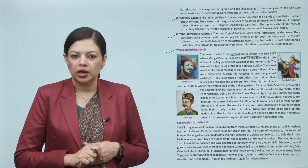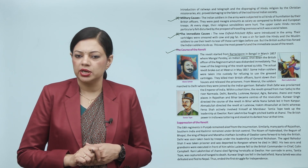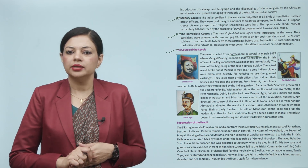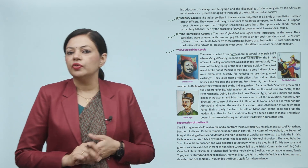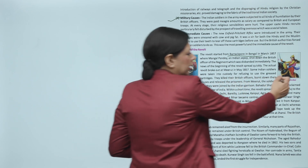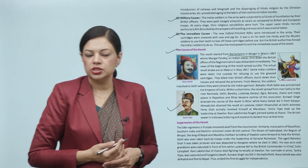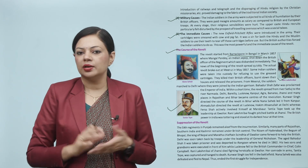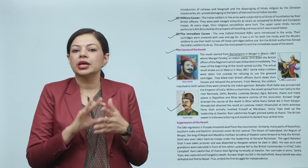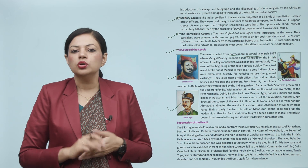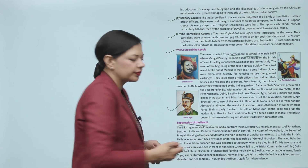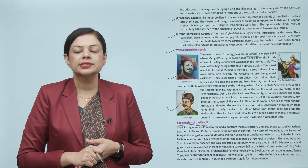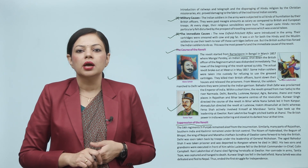Tatya Tope took up the leadership at Gwalior, and Rani Lakshmi Bai fought pitched battles at Jhansi. The British power in India was tottering and stood at its darkest hour. The revolt of 1857 had different heroes and leaders in different places who sacrificed their lives for the country. This revolt was fought on a very large scale from different corners of the country. However, the Sikh regiments in Punjab remained aloof from the insurrection.